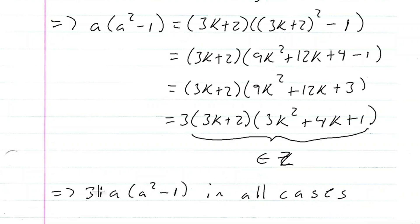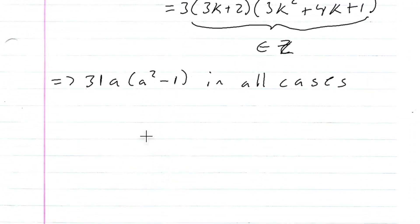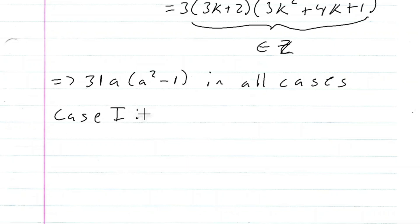So now we know for a fact that 3 does divide this number, where A is an odd integer. In this case it didn't matter if A was odd or even, but now trying to show that 8 divides it, we're going to look at the case where we need to show that 8 divides A times A squared minus 1 where A is an odd integer.